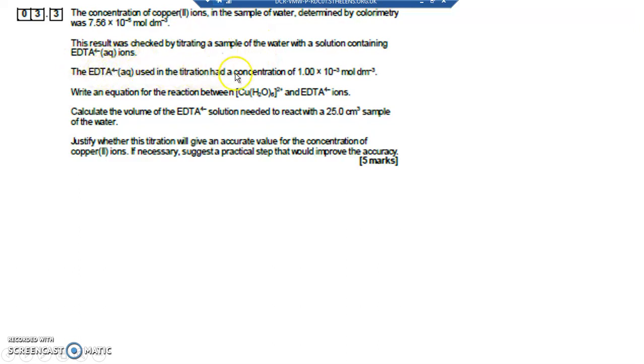The EDTA 4 minus ions used in the titration had a concentration of 1 times 10 to the minus 3. Write an equation for the reaction between copper H2O6, so it's got 6 ligands around it, 2 plus, and EDTA 4 minus ions.